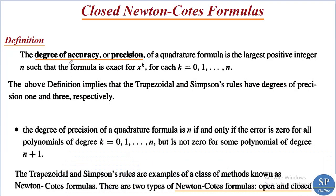First, we can discuss a definition. The degree of accuracy or precision of a quadrature formula is the largest positive integer n such that the formula is exact for x^k for each k equal to 0, 1, 2, 3, etc. up to n.